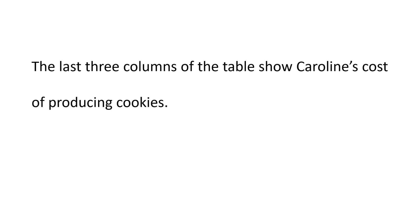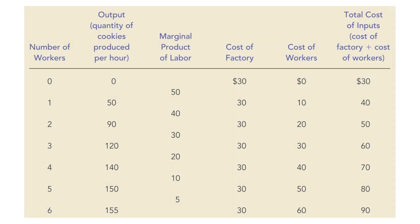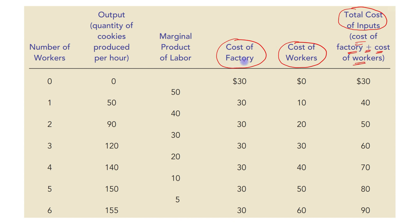The last three columns of the table show Caroline's cost of producing cookies. The last three columns are: cost of factory, cost of workers, and total cost of inputs, which is cost of factory plus cost of workers. Cost of factory is fixed cost — as you can see it is $30 in every case. Cost of workers is variable cost. So fixed cost plus variable cost will become total cost.